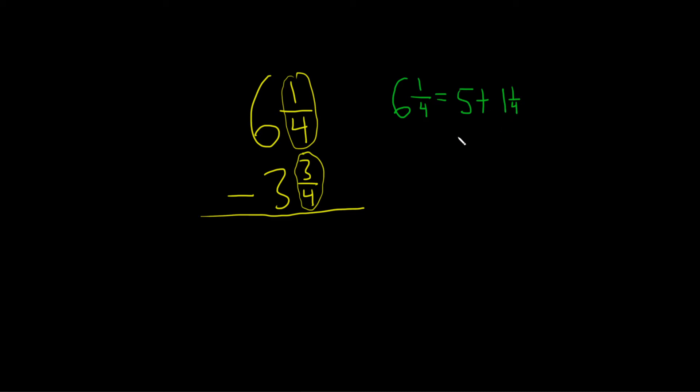And then 1 and 1 fourth can be written as an improper fraction as follows. You basically do 4 times 1, so you get 4 and then you add 1. So 4 times 1 is 4 plus 1 is 5. This is plus 5 fourths.